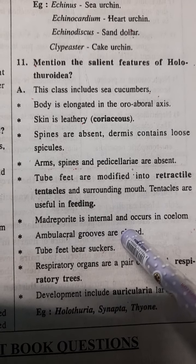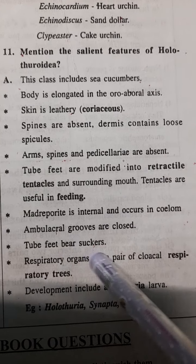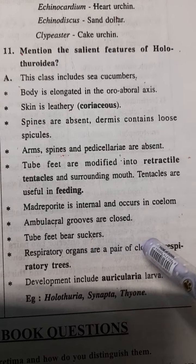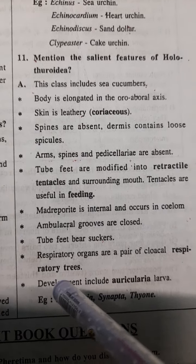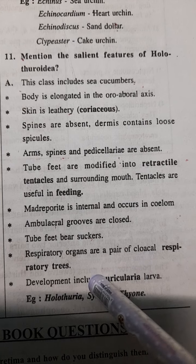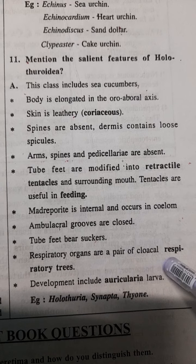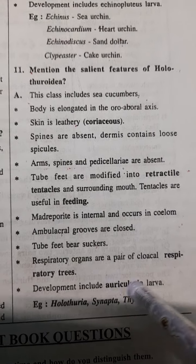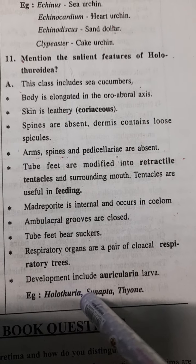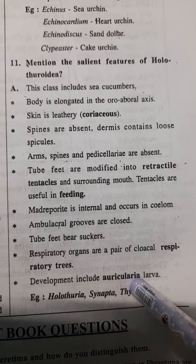Ambulacral grooves — how are they? They are closed. What are the respiratory organs? A pair of cloacal respiratory trees. How is the development? Development is indirect, meaning there is a larval stage. What is the larval stage? The auricularia larva. Examples are Holothuria and Synapta.